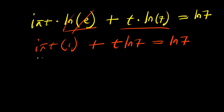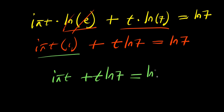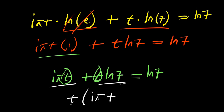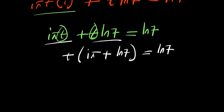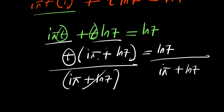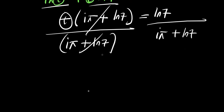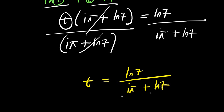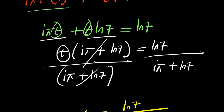Now from here, multiplying this out, you have i times pi times t, plus t times natural log of 7, equals natural log of 7. There is t here and t here, so I can factor out t. I have t times the quantity i times pi plus natural log of 7, equals natural log of 7. Now I want to isolate t. I divide both sides by i times pi plus natural log of 7. So t equals natural log of 7 divided by i times pi plus natural log of 7. This is one of the solutions using this particular approach.